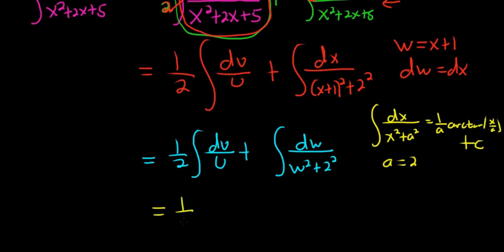Continuing, we have 1 half. This gives us a natural log with an absolute value. So ln absolute value x squared plus 2x plus 5.